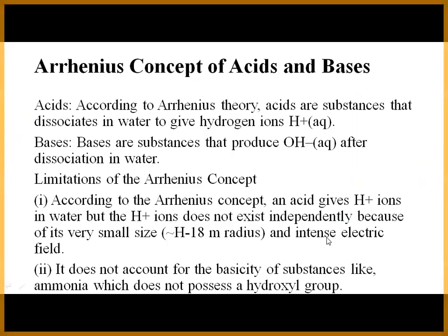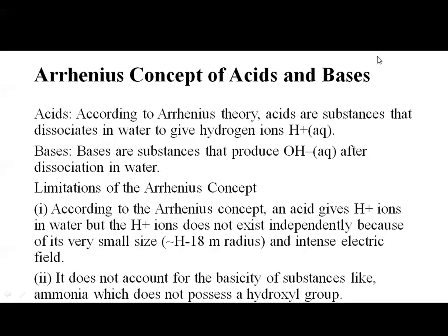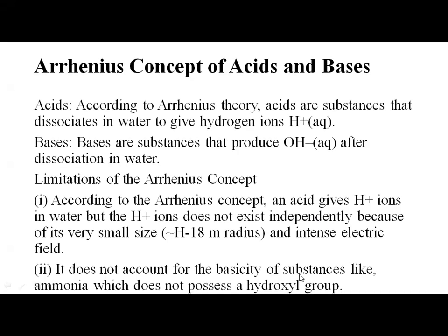According to Arrhenius theory, an acid gives H⁺ ions in water. However, H⁺ ions do not exist independently because of their very small size and intense electric field. Additionally, the theory does not account for the basicity of substances like ammonia (NH₃), which does not possess any hydroxyl group yet is basic in nature. Arrhenius theory says only substances giving OH⁻ ions in water are basic, but ammonia is also basic without giving OH⁻ ions.